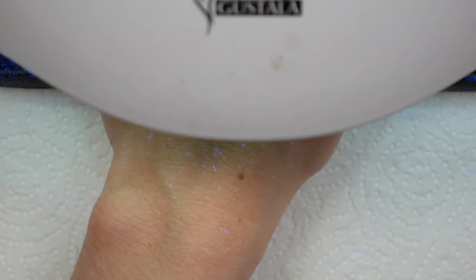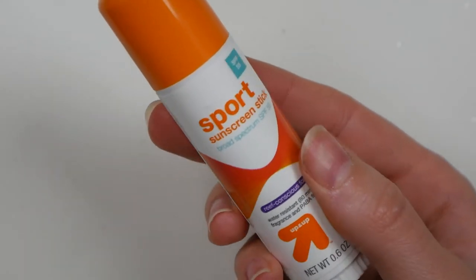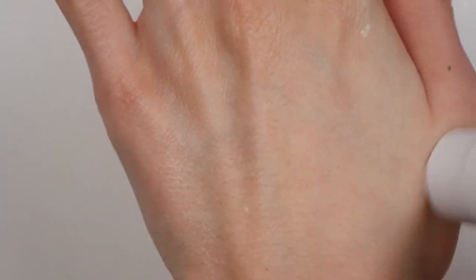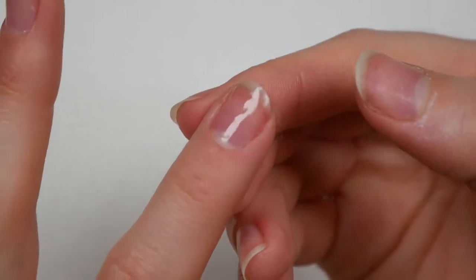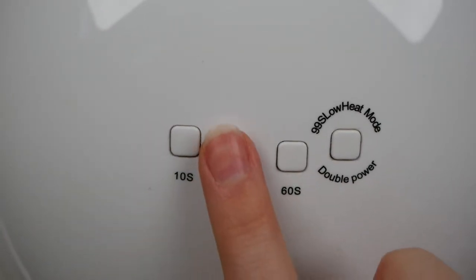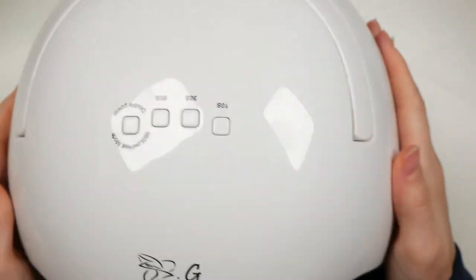So after putting on your base coat on all of your nails, slide your hand in the curing lamp for about 30 seconds, depending on which lamp you have. And again, before you do this, you definitely want to make sure that you put sunscreen on your hands, since this lamp does emit UV rays. You'll know your base layer is done when it's mostly dry, but still a little bit tacky. The timing is really just a lot of trial and error, since different lamps take longer than others.